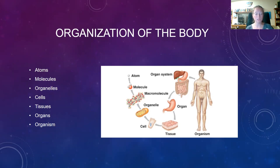Cells combine to form tissues. Epithelial tissue covers organs and lines body openings — our skin and the inside of our mouth are built on epithelial tissue. Connective tissue is found in bone and blood and helps bind other tissues together. Nervous tissue is made up of nerve cells that carry messages to and from the body. Muscle tissue can be voluntary or involuntary — voluntary or striated muscle moves our skeleton, while involuntary or smooth muscles perform tasks automatically, like our cardiac muscle, which beats without us having to think about it.